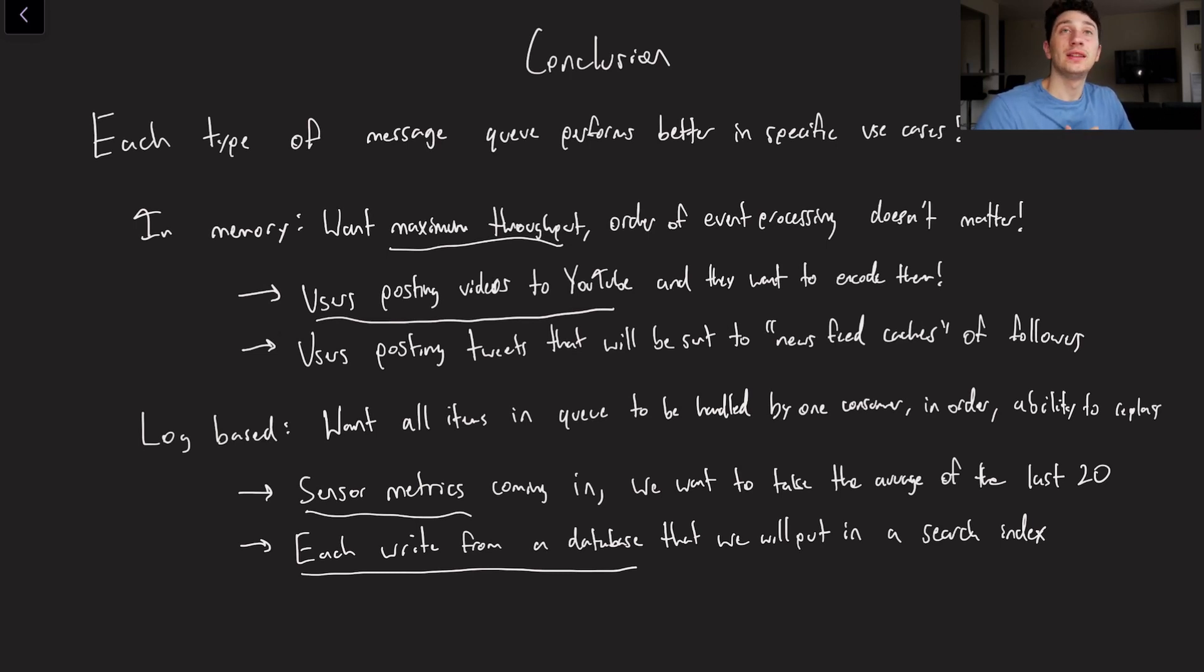Another example would be each write from a database that we're taking all of those writes, for example, and putting them into a search index. So in our last video, this was called change data capture. So in change data capture, obviously, it's very important that the ordering of the writes of the database are preserved. Because let's say I say x equals five, and then I say x equals seven. Well, that's very different than if I said x equals seven, and then I overwrote that with x equals five. So it's very important in a situation like change data capture to preserve the order of our events. And also, if you want to add new derived data sources down the line, it would be great if those events didn't get deleted the second we put them in our search index. Hence, something like a log based message queue is a really appropriate choice here.